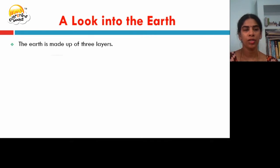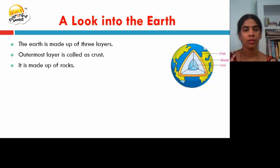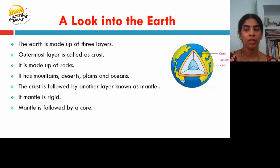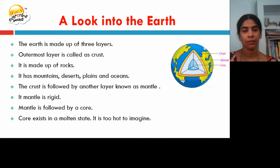The earth is made up of three layers. The outermost layer is called the crust, which is made up of rocks and has mountains, deserts, plains, and oceans. The crust is followed by another layer known as the mantle, which is rigid. It is followed by the core, which is in a molten state and is too hot — its temperature is around 4000 degrees Celsius.